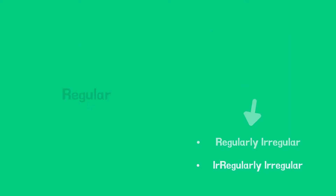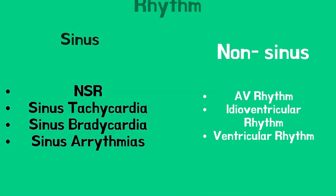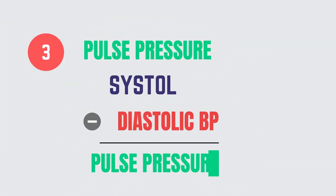Rhythm can also be classified by its origin — sinus or non-sinus rhythm. Sinus rhythm can be normal sinus rhythm, sinus tachycardia, sinus bradycardia, or sinus arrhythmias. Non-sinus rhythms include atrioventricular rhythm, idioventricular rhythm, and ventricular rhythm. We will learn more about these later.